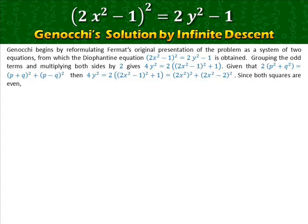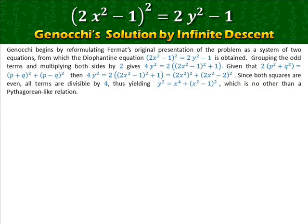Since both squares are even, all terms are divisible by four, thus yielding y² = x⁴ + (x² − 1)², which is a Pythagorean-like relation. Since y is always odd, Genocchi splits the problem by the parity of x. Case one: x is odd.